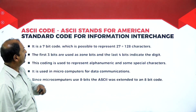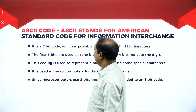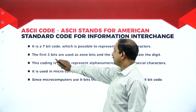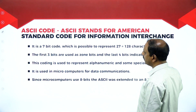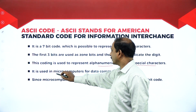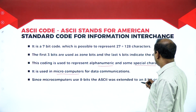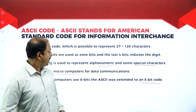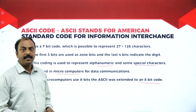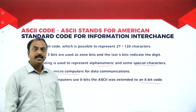ASCII stands for American Standard Code for Information Interchange. It is a 7-bit code representing around 128 characters. The first 3 bits are zone bits and the last 4 bits indicate the digit. This coding is used to represent alphanumeric and special characters, and is used in microcomputers and for data communication. Since microcomputers use 8 bits, ASCII was extended to an 8-bit coding system.